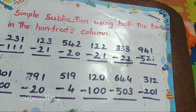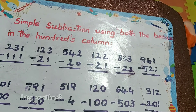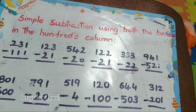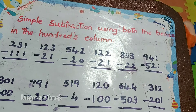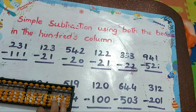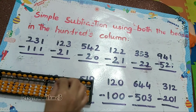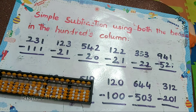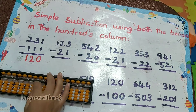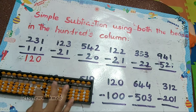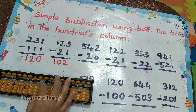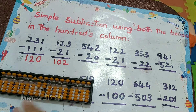Next one: simple subtraction using both the bits in the hundreds column. So let's see. 231 minus 111, so the answer is 120. Next one: 123 minus 21, so the answer is 102.